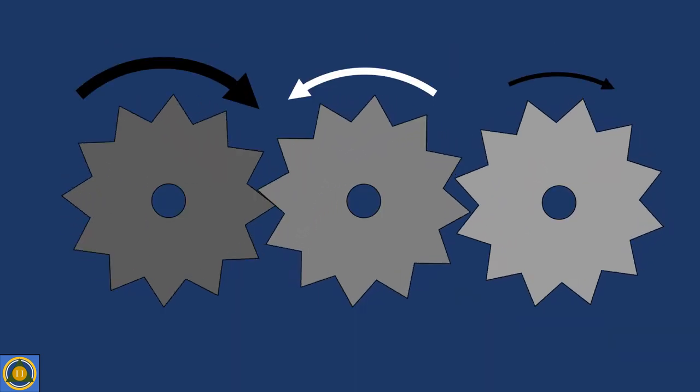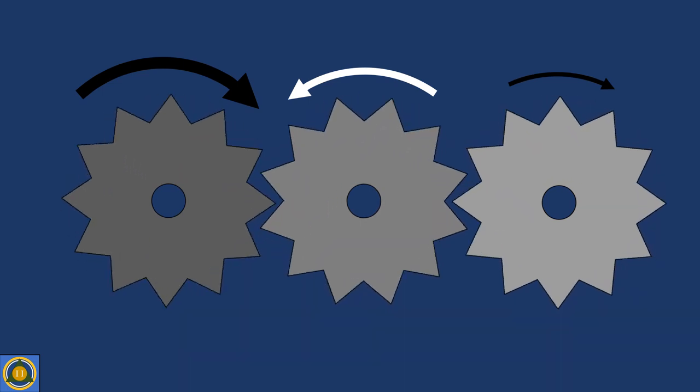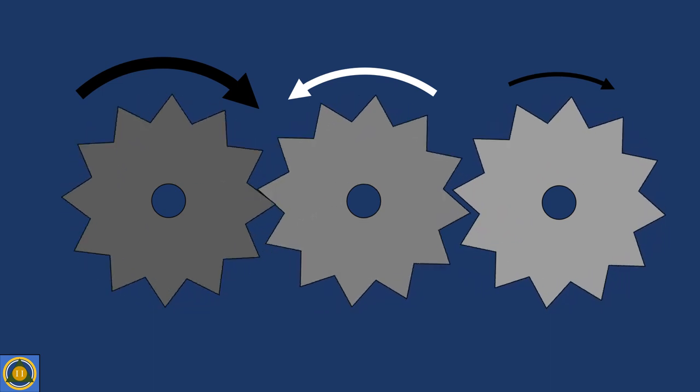One example of the second law in action would be energy lost in the rotation of gears. The first gear will rotate with more energy than the last gear due to friction, air resistance, and other factors.